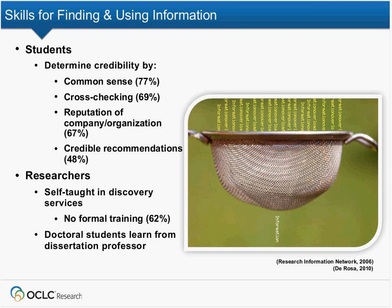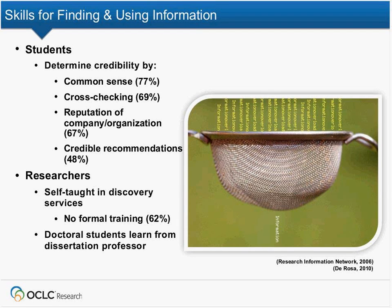Students determine credibility by common sense, by the reputation of a company or organization. They look for .edu, .ac outside of the U.S., and .gov. They mentioned times.org but aren't sure about that. They also look for credible recommendations. I have some quotes.